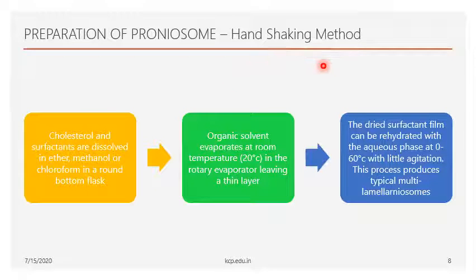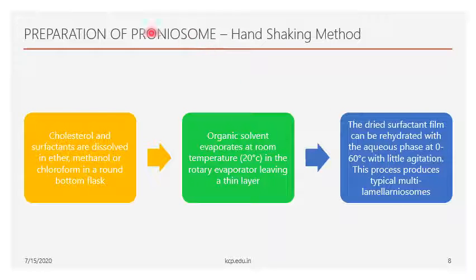After forming a thin layer, the dried surfactant film is rehydrated using an aqueous phase containing the drug, which is poured into the round-bottom flask and dissolved along with the thin layer at 0 to 60 degrees Celsius with hand agitation. After agitation, it is filtered and multi-lamellar proniosomes are obtained. This is the hand shaking method for preparation of proniosomes.